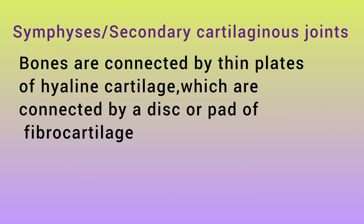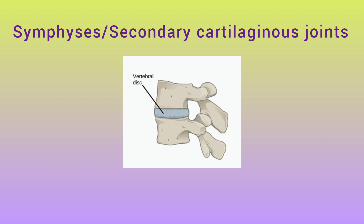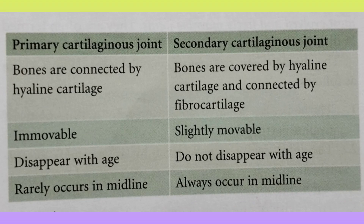Symphysis, also called secondary cartilaginous joints, has bones connected by thin plates of hyaline cartilage which are then connected by a disc or pad of fibrocartilage. So there is a thin hyaline cartilage plate and a fibrocartilage disc connecting the two bones. For example, the intervertebral disc — with fibrocartilage and hyaline cartilage. Primary cartilaginous joints: bones connected by hyaline cartilage, immobile, and disappear with age. Secondary: hyaline and fibrocartilage, slightly movable, do not disappear with age.